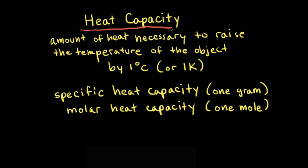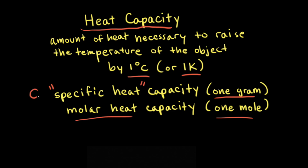The heat capacity of an object is the amount of heat necessary to raise the temperature of the object by 1 degree Celsius or 1 Kelvin. The specific heat capacity, often just called specific heat, is the heat capacity of 1 gram of a substance, while the molar heat capacity is the heat capacity for 1 mole of a substance. Specific heat is symbolized by capital C with a subscript S, and molar heat capacity by capital C with a subscript M.